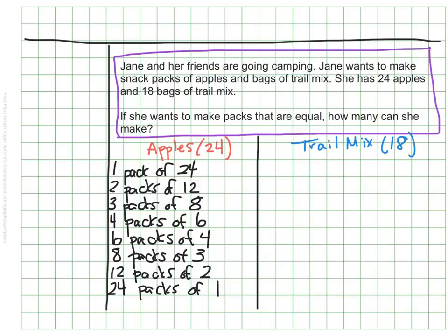Do you notice anything about these numbers? You might notice that these are all the factors of 24. If I want to break the apples into separate groups, and I want to keep them as whole apples, I need to look at the factors. So this list of eight factors helps me know the eight different ways she could separate her apples evenly.